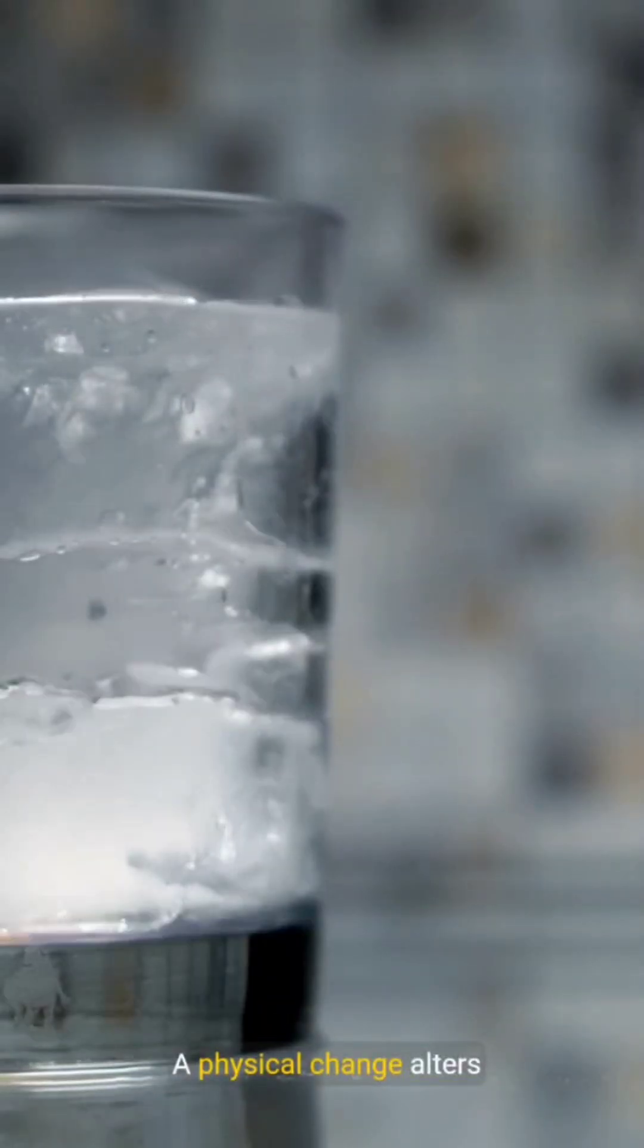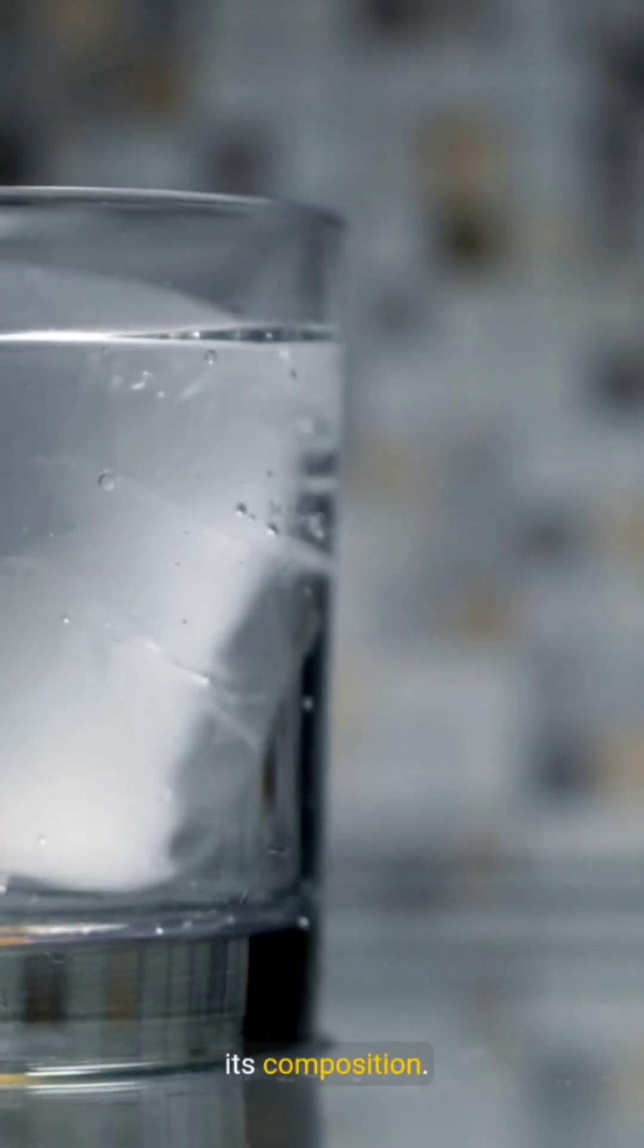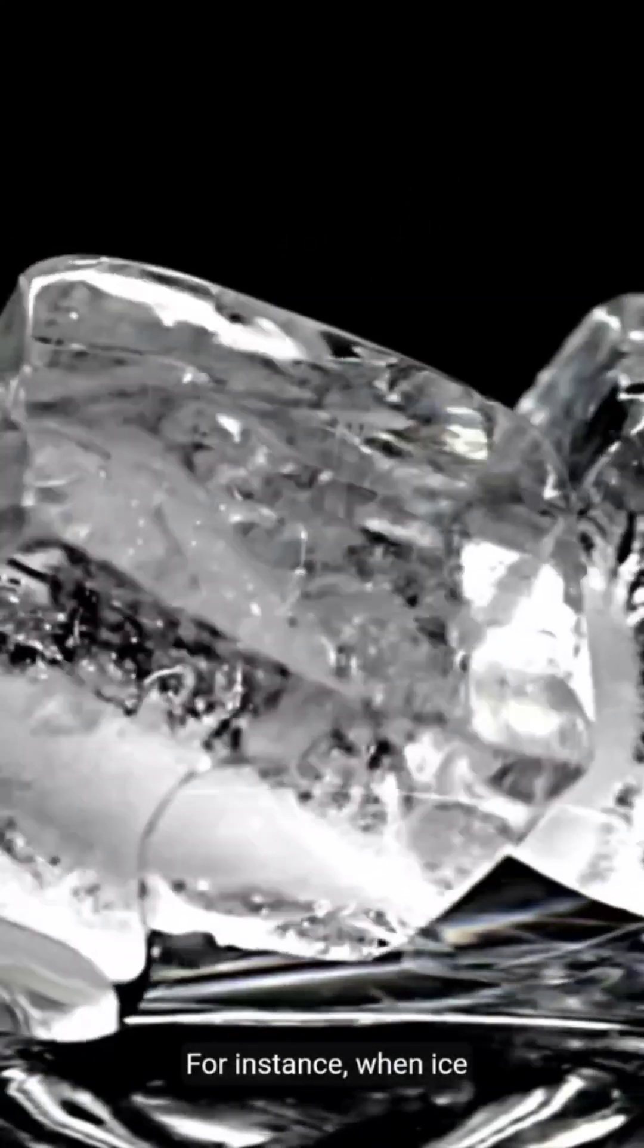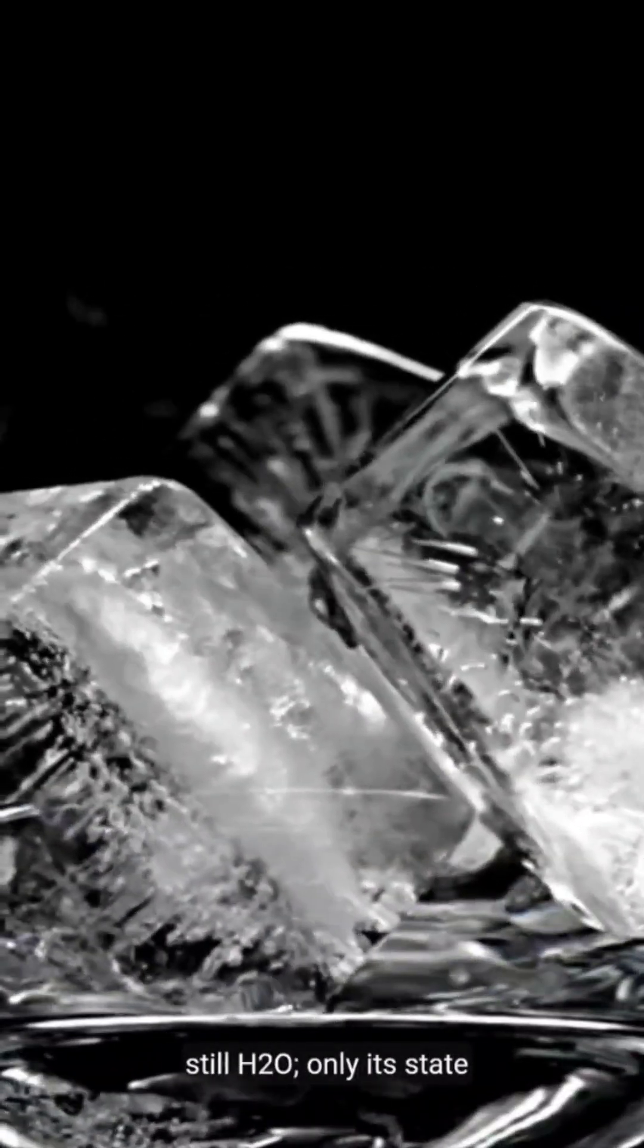A physical change alters the form or appearance of matter but doesn't change its composition. For instance, when ice melts into water or water boils into steam, it's still H2O. Only its state has changed.